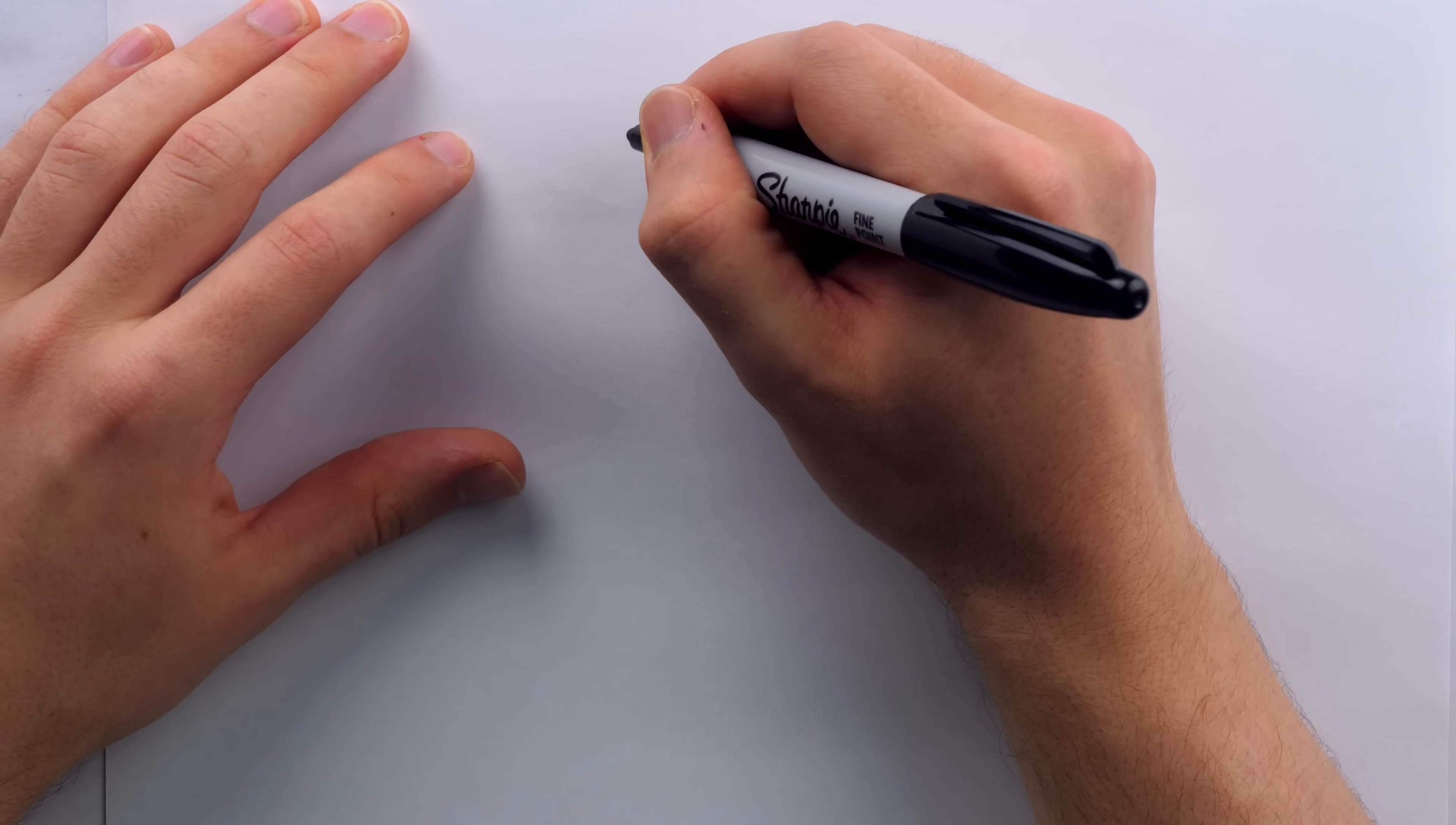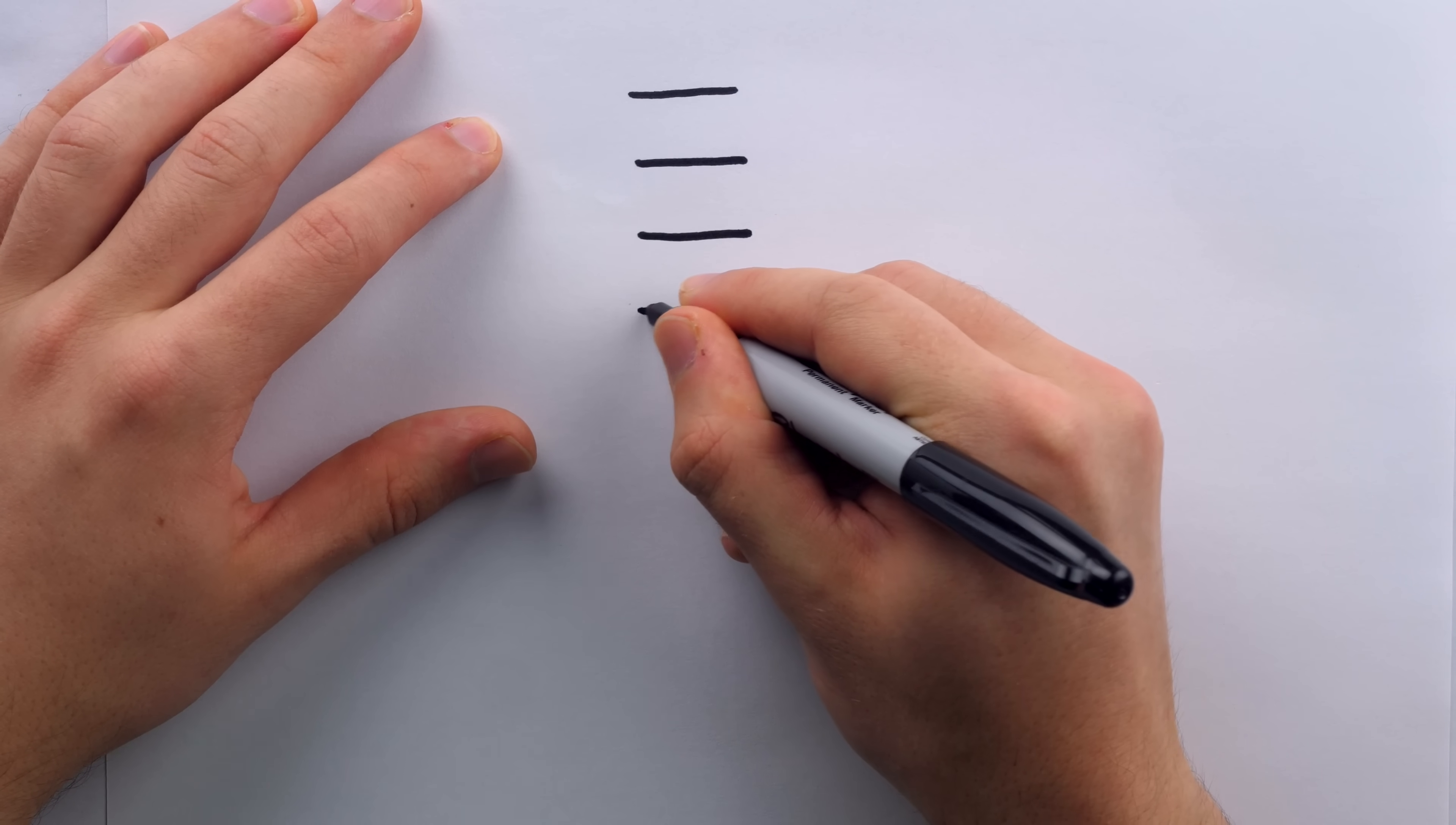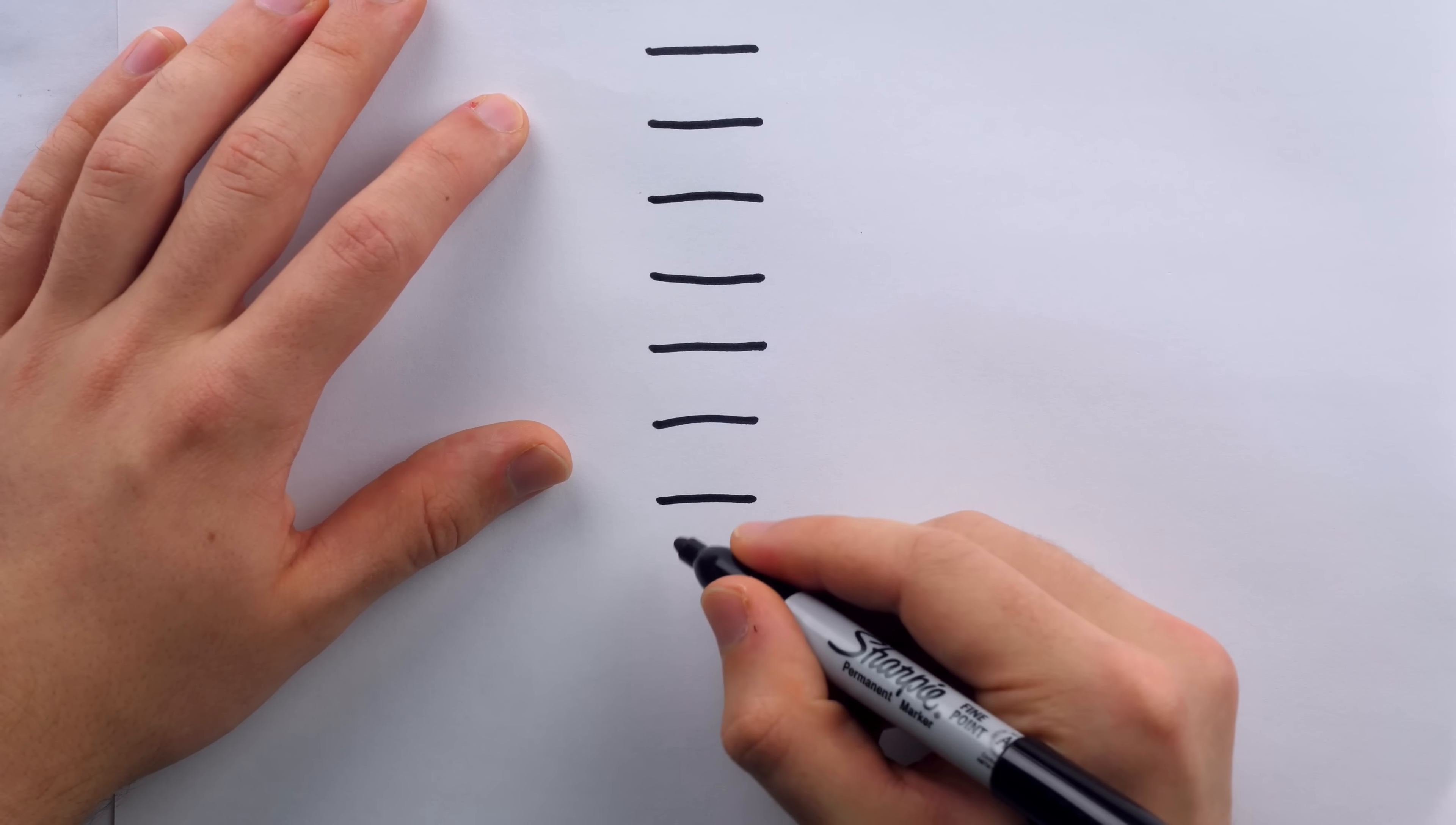I like to just write them out ahead of time. That way I'm not caught off guard by how the audience member might have chosen to format it if I left it up to them. Since the audience member has a decent amount of work to do with this trick, try to make it as easy as possible for them. So just do the 10 blanks yourself. I think that's a good idea.